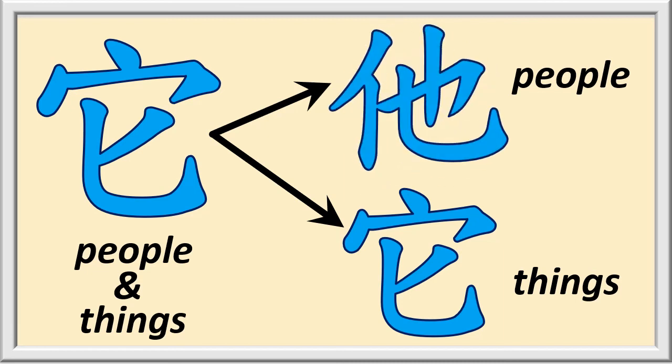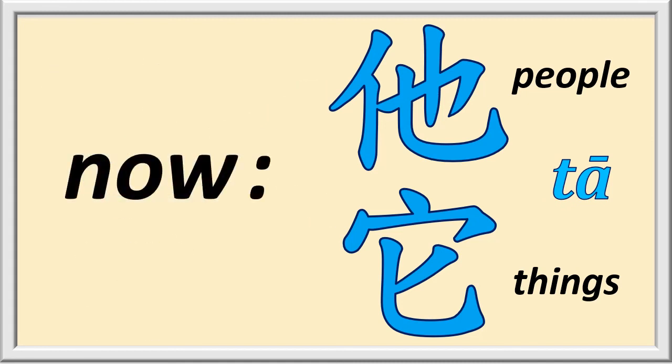In speech, however, it made no difference whatsoever, since the original tā and its two derivatives were all pronounced the same. At around this same time, tā for people was considered inadequate because it made no distinction between male and female genders, so a female version was created. It wasn't immediately adopted by society at large. Even in the 1970s, when I was at university, tā for people was still inclusive of both genders, despite having been invented 50 years earlier.